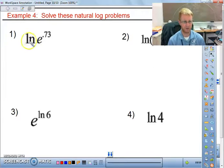So looking at this, same properties. ln is base e. So ln, base e, and e are going to cancel out. So our answer here is just 0.73.